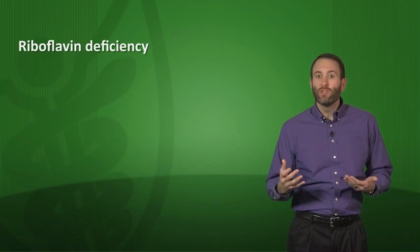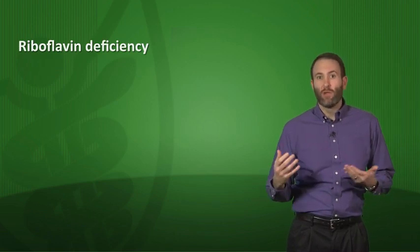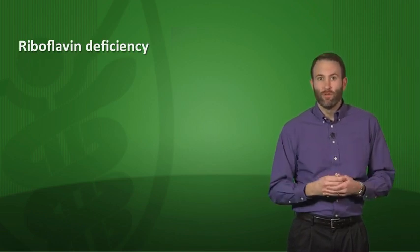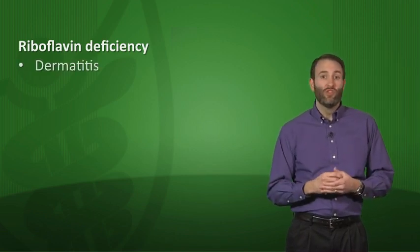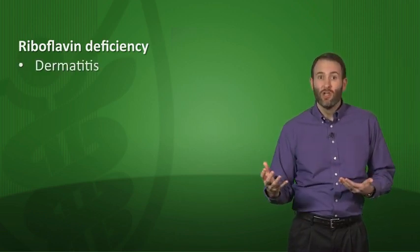What are the symptoms associated with riboflavin deficiency? You're going to have dermatitis, cheilosis, angular stomatitis, and glossitis of the tongue.